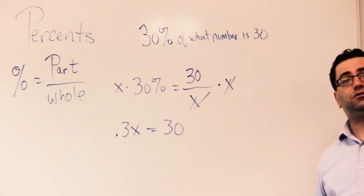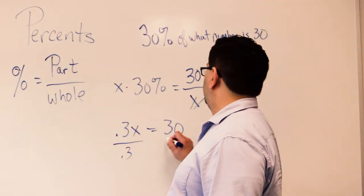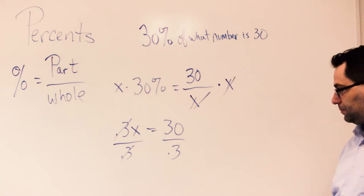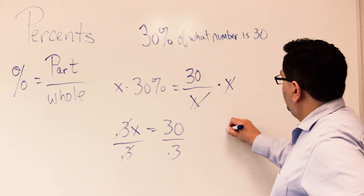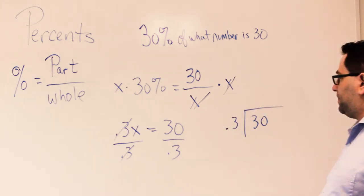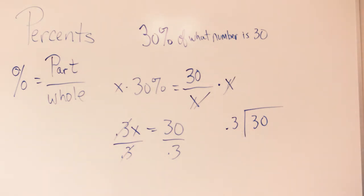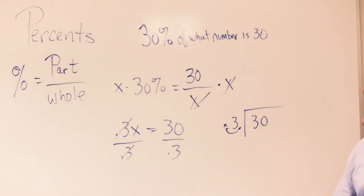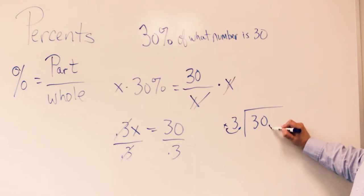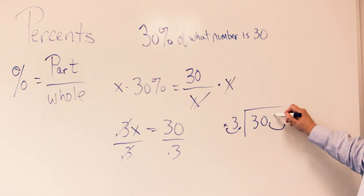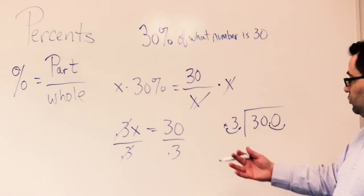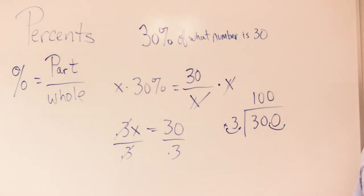What's the opposite of times point three? Divide by point three. The point threes cancel out, and I'm left with x equals thirty divided by point three. Let's write this out in division. I have point three going into thirty. Whenever I have a decimal point on the outside, fix that right away — move the decimal once, so I also move it once on thirty and add a zero. How many times does three go into three hundred? There are three hundreds in three hundred — therefore, my answer is one hundred. Thirty percent of a hundred is thirty.